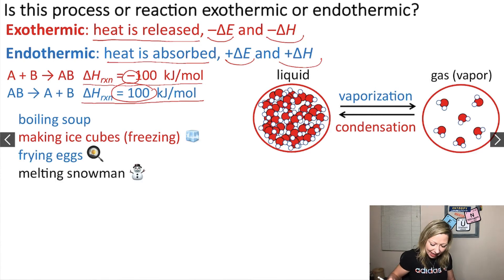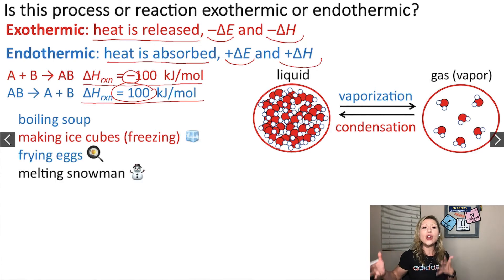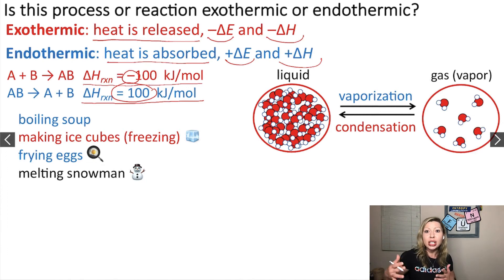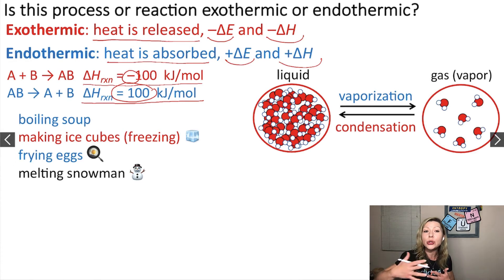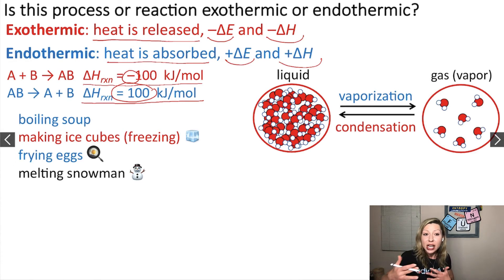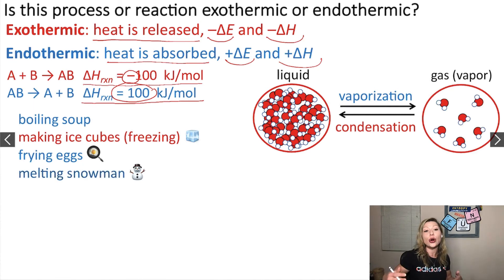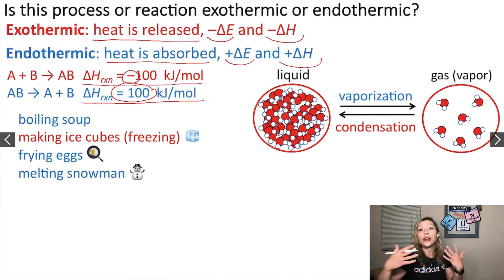The next example is melting a snowman. When would a snowman melt? When the sun is shining on the snowman — so we are putting energy into the snowman. This is again going to be an endothermic process that needs energy or heat to proceed.